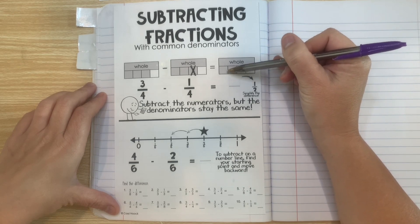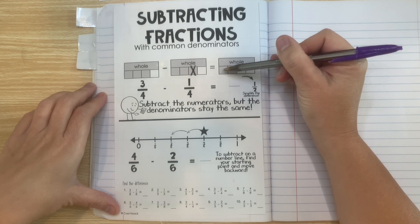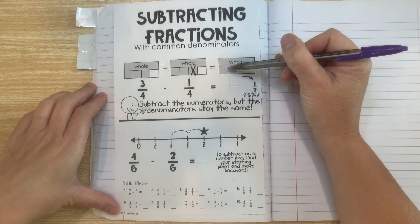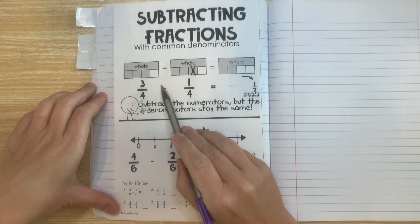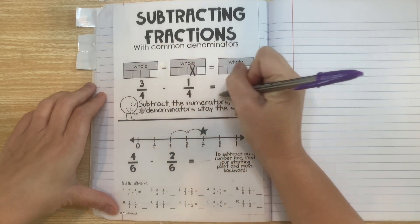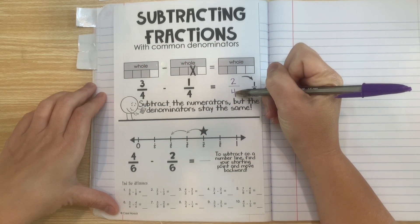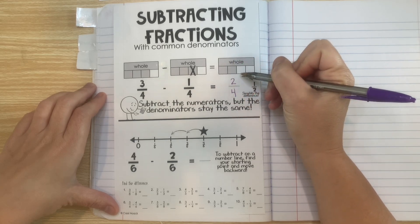Now remember the difference is the answer to a subtraction problem. So here we have 2 out of 4. So 3 minus 1 is 2 but your denominator stays the same because the denominator always represents the number of parts in one of the wholes.